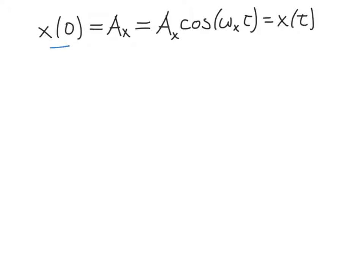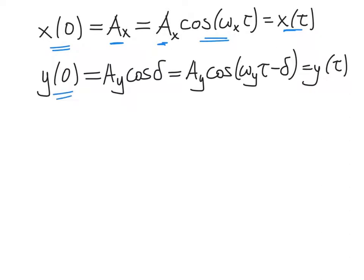Looking at the x solution, x at t equals zero, plugging in t equals zero, we just get ax, the amplitude. After a time tau, the solution should return to the same value for x, so ax has to equal ax times the cosine of omega_x times tau — that is x at tau. The same has to hold true for the y solution: y at zero equals ay times cosine of delta, and that has to equal ay times cosine of omega_y times tau minus delta. These two conditions, one and two, both have to hold for periodic motion of this two-dimensional oscillator.